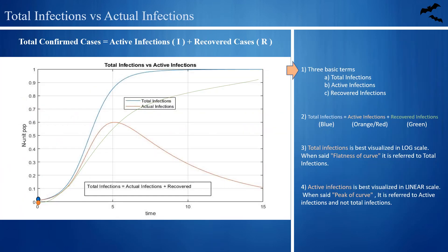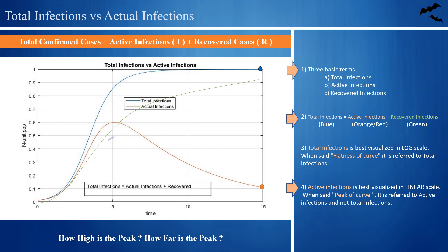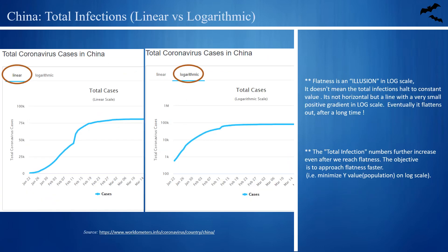There is an important term called total infections, which is the summation of active infections and recovered cases. The active infection is a red peaky curve and the recovered cases is the green ramp curve. Their addition gives total cases, which looks like an inverted S shape on a linear scale. For active infections, the emphasis is always on the peak location in the XY grid — the idea is to have a shorter peak and farther on the x-axis. For total cases, the emphasis is on exponential growth and terminal flatness. Here is an example of China's total infection data: on a linear scale it looks like an inverted S, and on a logarithmic scale it starts as an inclined line and then flattens out.